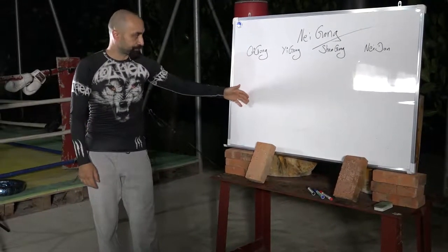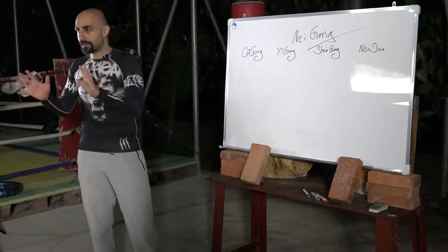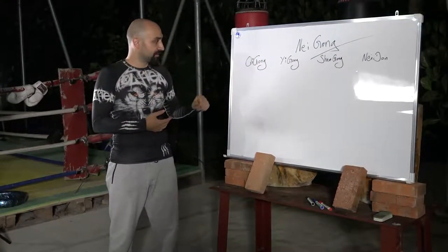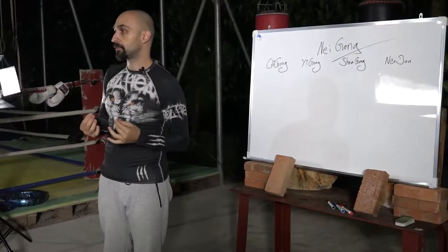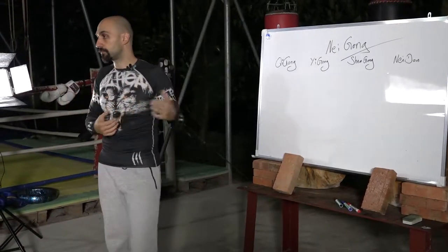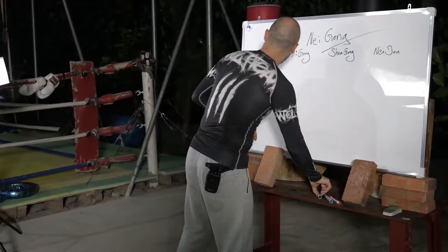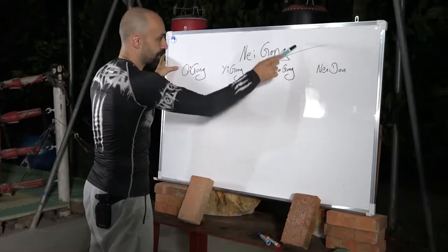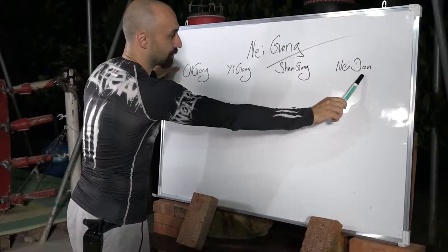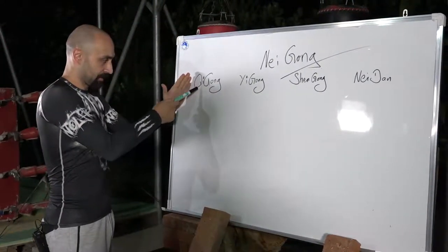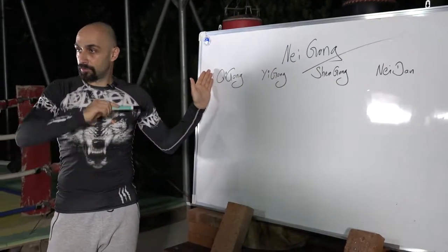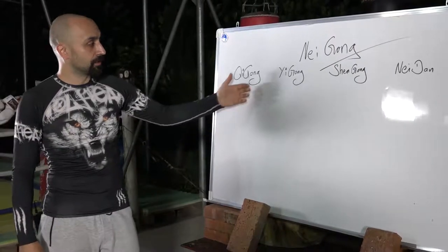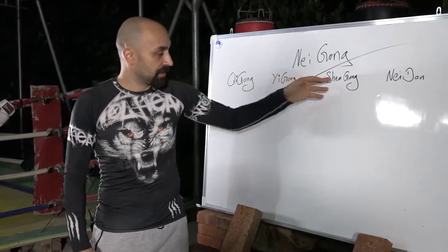What are the levels of Qigong and what differs Qigong from Yigong? The main difference is that in one, the mind is included within the work, and in the other, as much as possible, you do not include your mind into this work. The first four levels go from Qigong into Yigong, and then continue into Shengong.